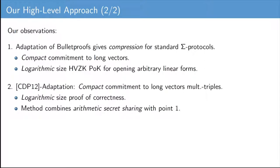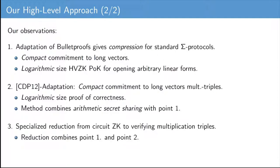Third, we adapt the techniques from Kramer, Damgaard and Pastro. In our adaptation, we start with a single compact commitment to all the coefficients of three long vectors of multiplication triples. Combining arithmetic secret sharing with our compressed Sigma Protocol, we obtain a logarithmic size proof of correctness for the corresponding multiplicative relations. Finally, we obtain circuit zero-knowledge protocols by reducing the circuit zero-knowledge problem to proving correctness of multiplication triples.